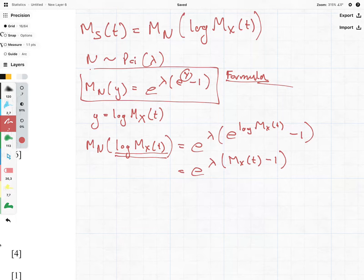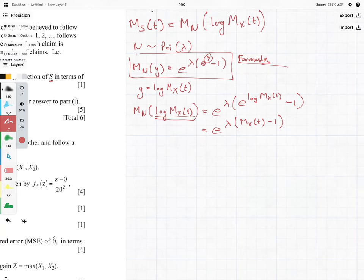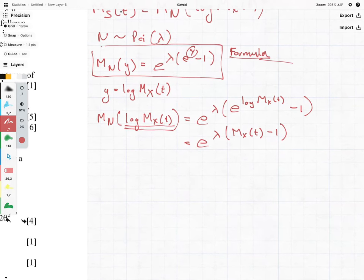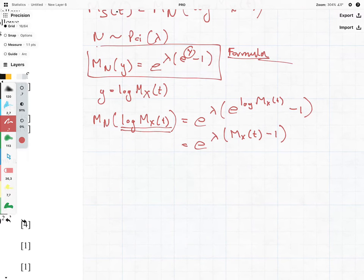If you want to know how I got how these two cancel each other out, that is from the mathematics that one needs in order to do statistics at this level. So there we kind of have our answer because we know that this is equal to Ms(t).